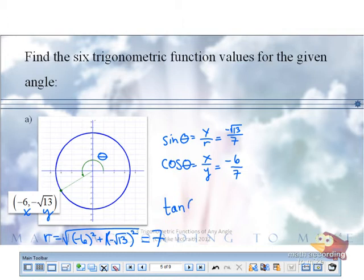Is y over x. Square root of 13 over 6. And how does that clean up? Square root of 13 over 6. Tangent is positive.